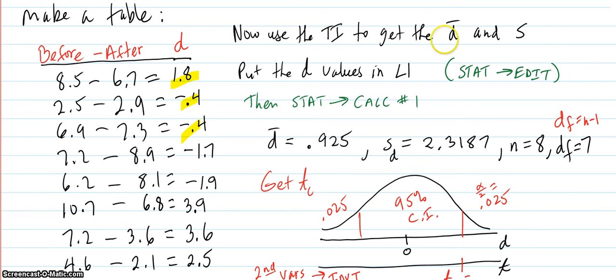Now we use the TI to get the average of those differences and the standard deviation for those differences. Sometimes they put a little d down here to remind you that you're doing the standard deviation of the differences, not the individual standard deviations for the before numbers and the after numbers.